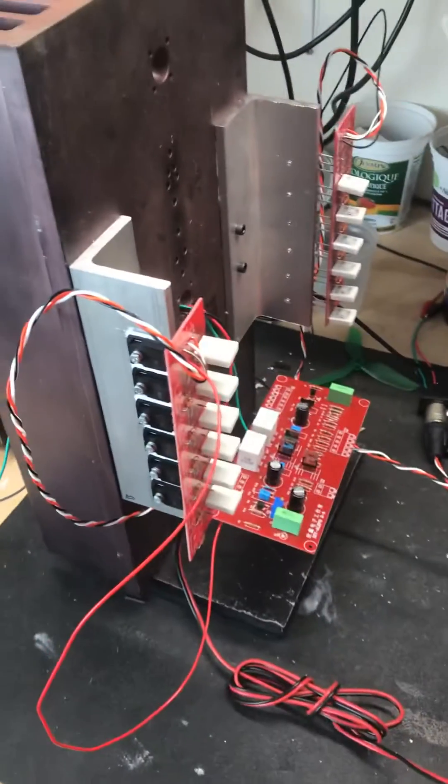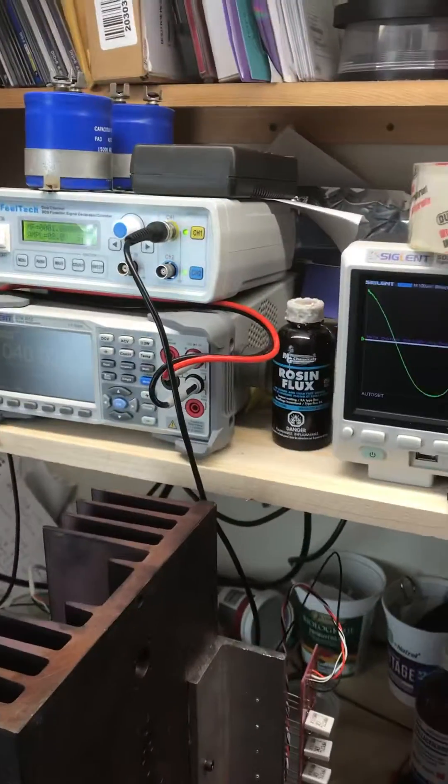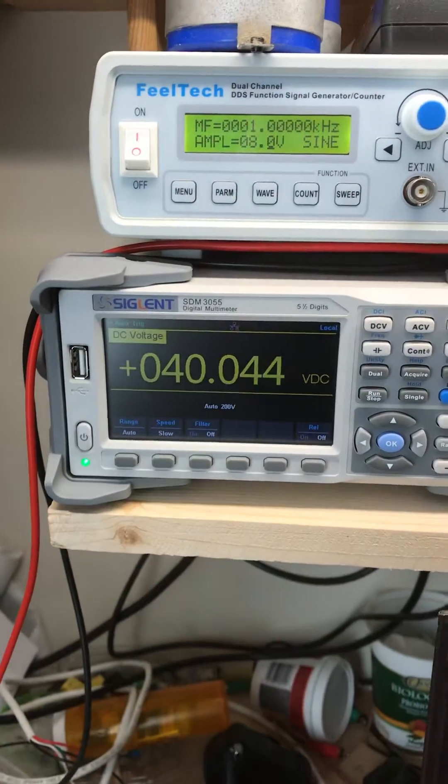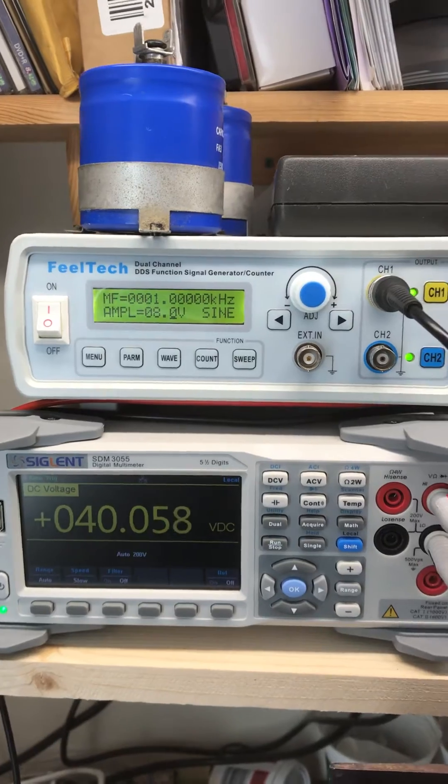Just a little video of a Class A ELF 2 running. 40 volt rails, 8 volt peak input.